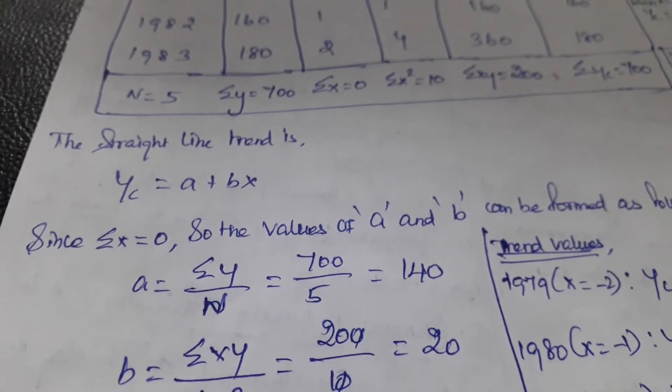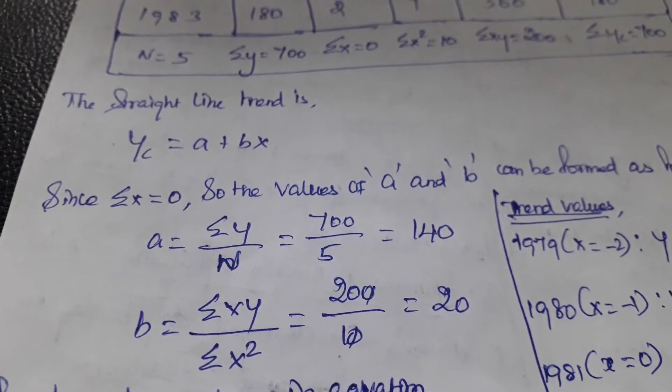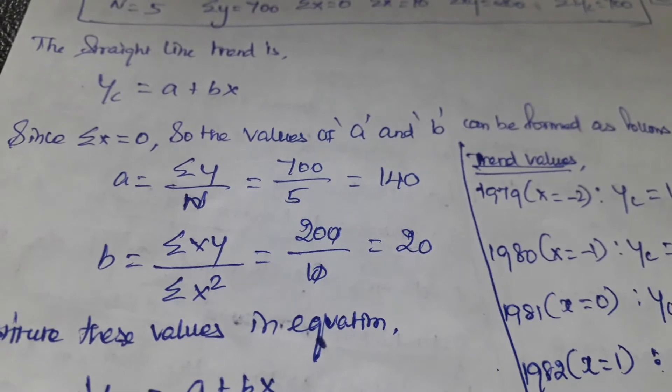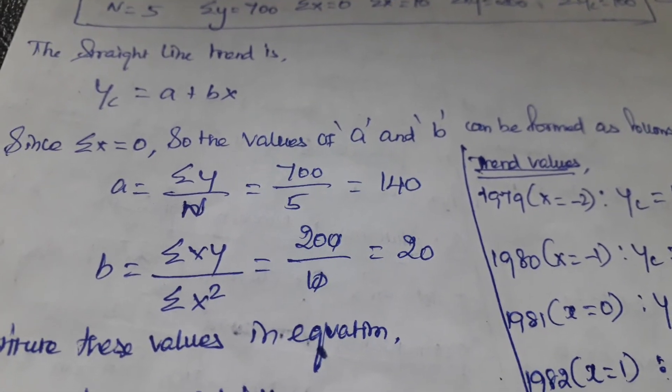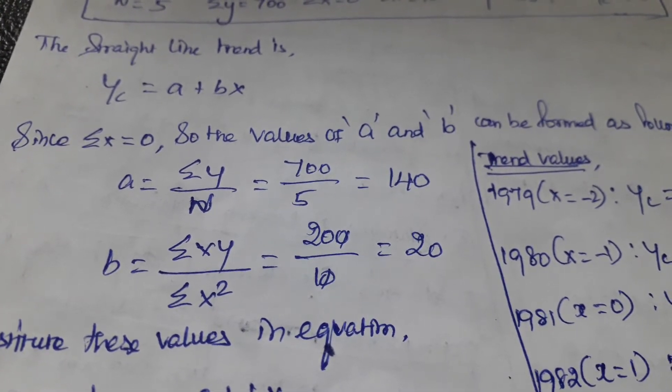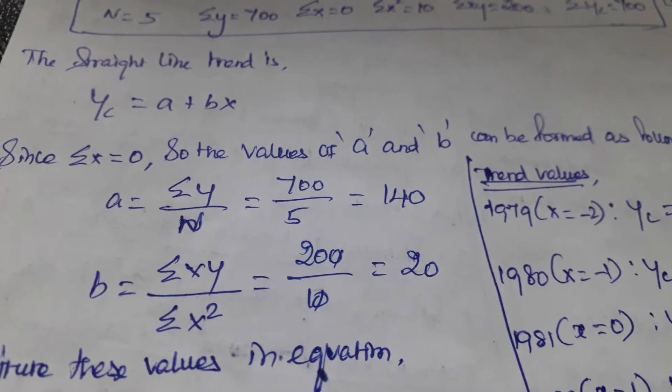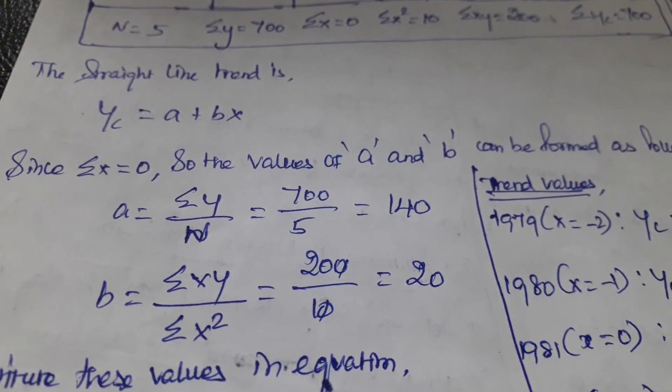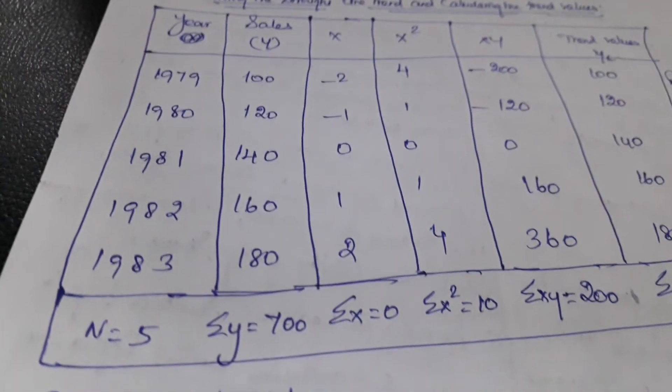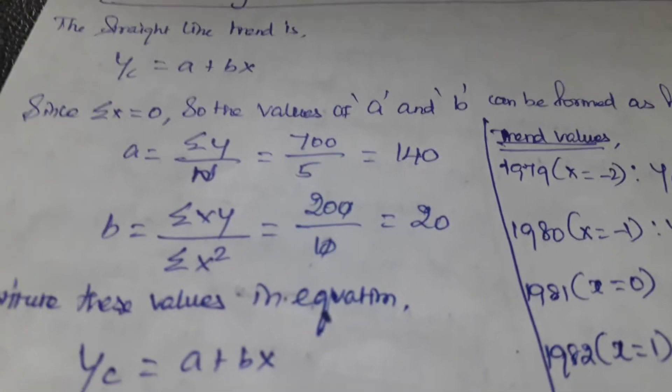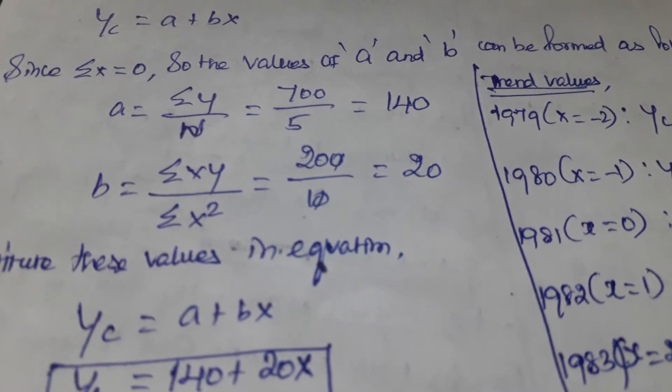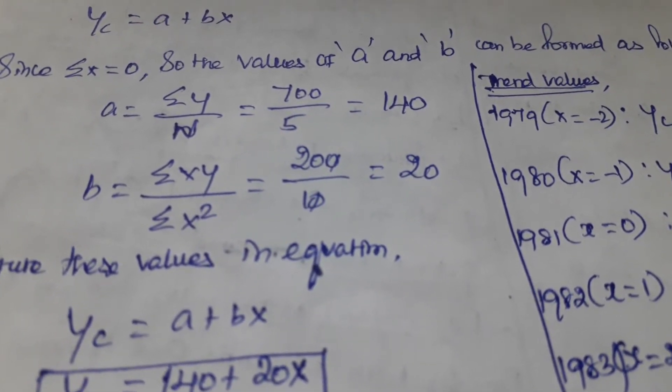Yc denotes the trend value. Since summation of X equals 0, the values of a and b can be formed as follows: a = summation Y / N. Summation Y is 700. N is 5, which is how many years we have. So 700 / 5 = 140. Then b = Sigma XY / Sigma X squared.